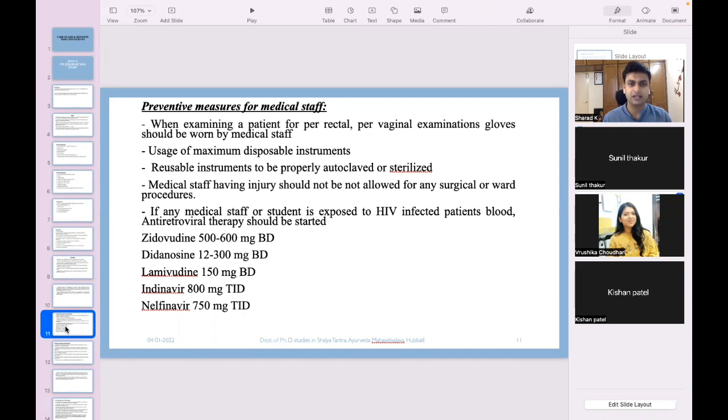Common modes of transmission include receipt of contaminated blood or blood products, invasive medical procedures using contaminated equipment, and for hepatitis B transmission from mother to fetus at birth or by sexual contact. It's very important that when going into procedures, you screen the person with all these investigations, especially HBsAg. Acute infection may occur with limited or no symptoms or may include jaundice, dark urine, extreme fatigue, nausea, vomiting and abdominal pain. Preventive measures for medical staff: when examining a patient, especially for per rectal or per vaginal examinations, gloves should be worn. Double-glove examination is better and recommended. If exposed to HIV-infected patient's blood, antiretroviral therapy should be started with zidovudine, stavudine, lamivudine, indinavir or nelfinavir.